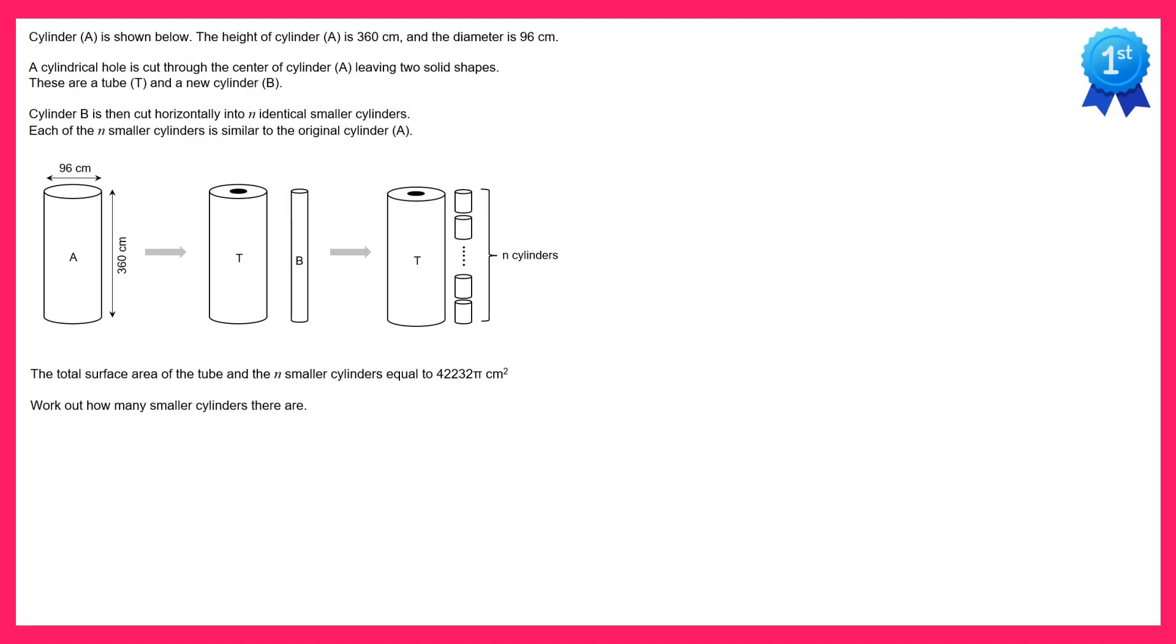Hello and welcome to the solution video to spicy question number 38. In this question we've got lots of different cylinders. We've got the original cylinder A, then cylinder B is cut from this cylinder, and then we chop cylinder B into n smaller cylinders. We're told in the question that the original cylinder A is similar mathematically to the smaller cylinders.